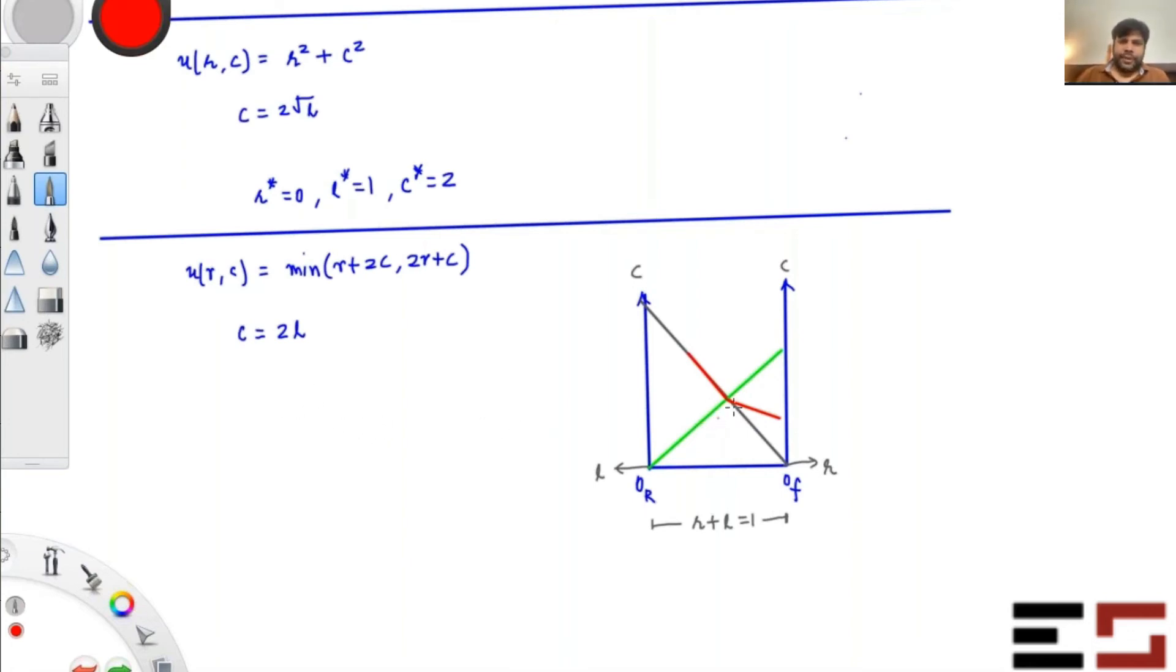And they are above this line. Notice that R plus L is 1. So what we can do is replace L by C/2. So basically, we get R plus C/2 is equal to 1. They are on this line. And they also satisfy this property that because this is above the 45-degree line, C must be greater than or equal to R.